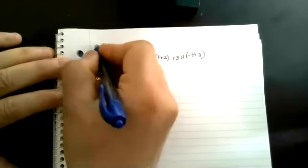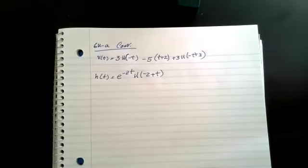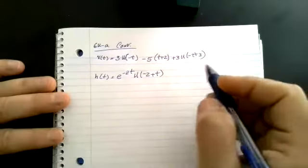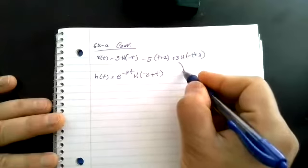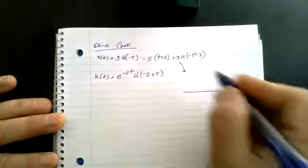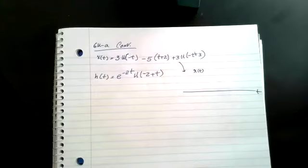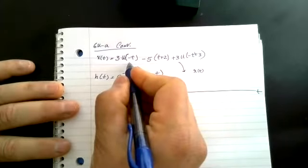The first thing we need to do is write X of tau. Let's draw X(t) first. Since we've done a few of these, we can shortcut some steps. We know this one is equal to one when T is less than or equal to zero, because minus T has to be larger than or equal to zero, which means T has to be less than or equal to zero.